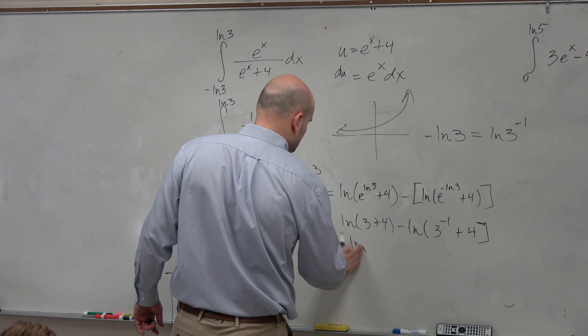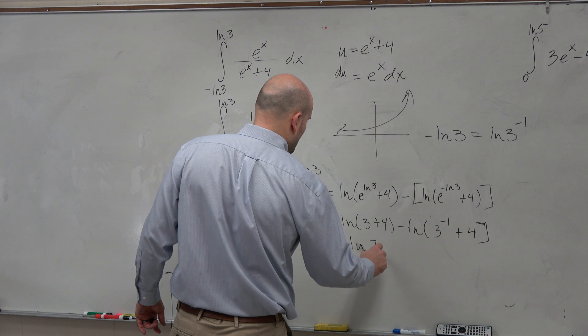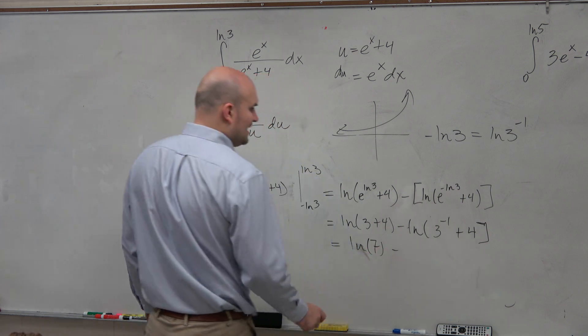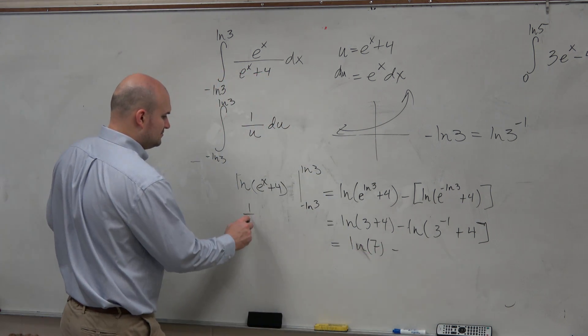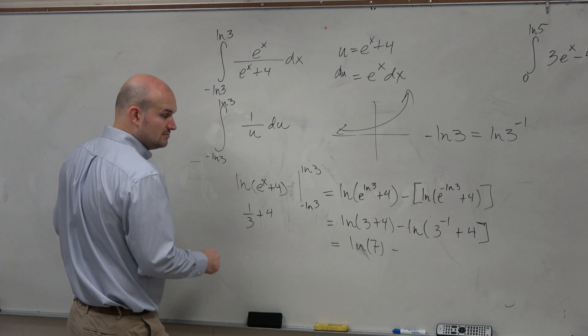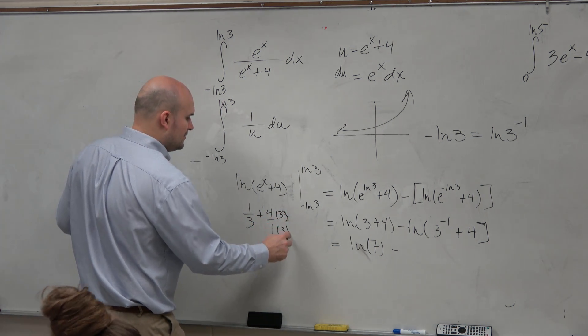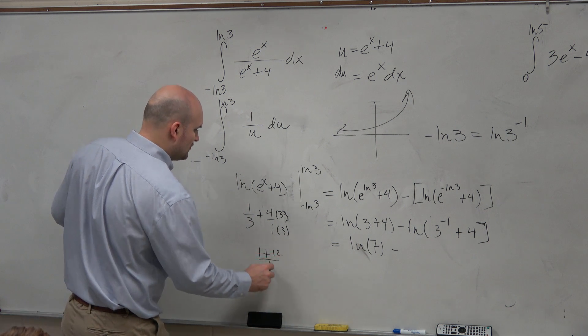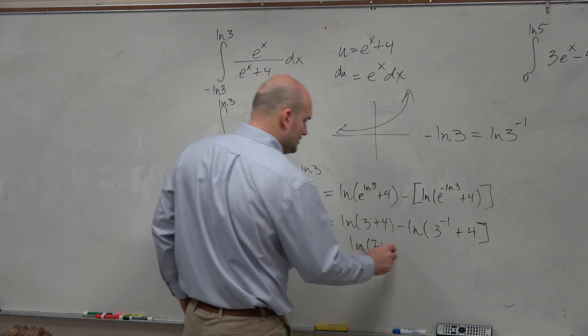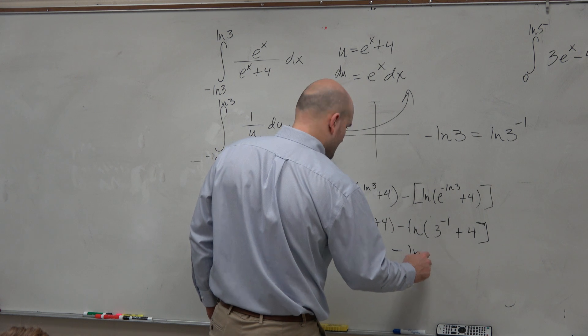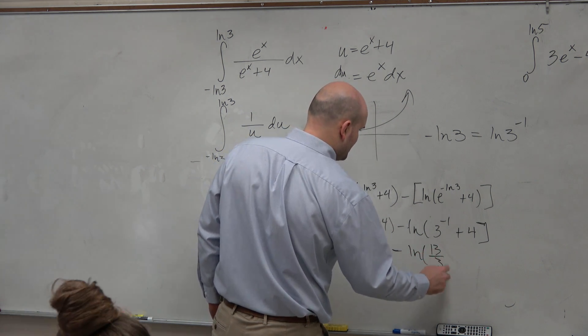Therefore, I get ln of 7 minus. Now, this is going to be 1/3 plus 4. If you get common denominators, you can multiply by 3 over 3, which is 1 plus 12 over 3. So it's 13 over 3 minus ln of 13 over 3.